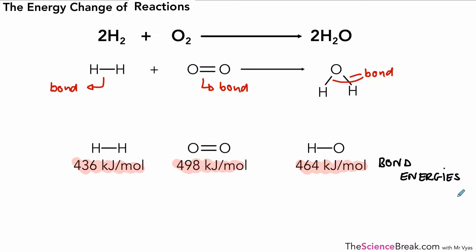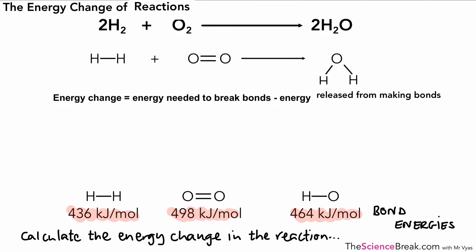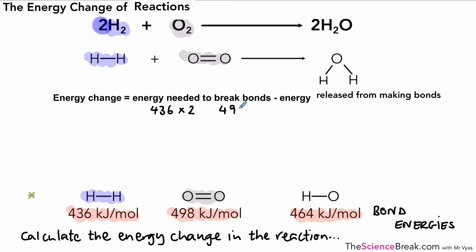The calculation we want to do is based on energy changes in this reaction. The energy change equals the energy needed to break the bonds minus the energy released from making bonds. Make sure you are talking in terms of energy needed and energy released. So we need to look at the bonds and the energies in the bonds. Starting with the hydrogen: we've got 436 kJ/mol for our hydrogen, but remember we've got two hydrogens — it's 2H₂ — so it's 436 times 2. We also have bonds being broken in the oxygen. The energy shown there is 498, so we have 498 for our one molecule of oxygen being broken apart into the atoms.